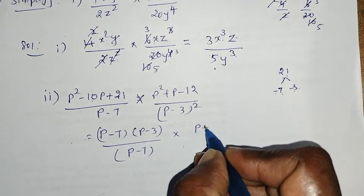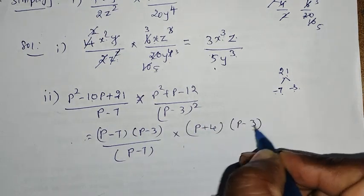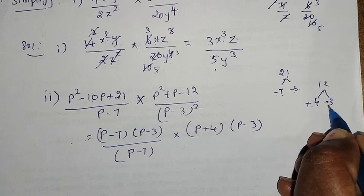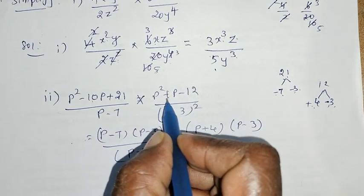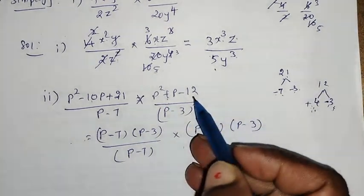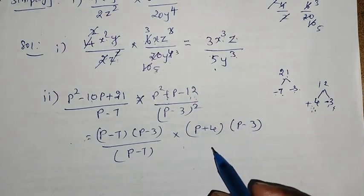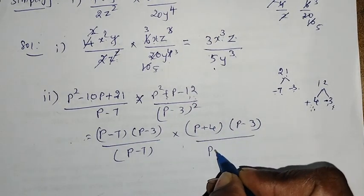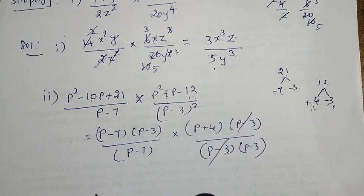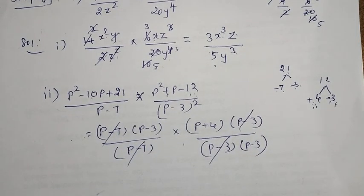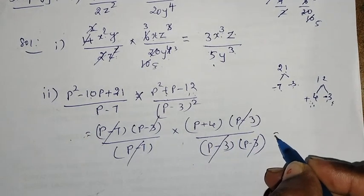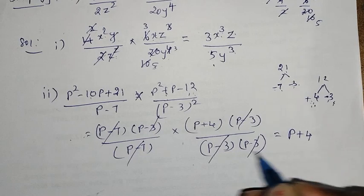Into P plus 4 minus 3. Now 12 is split: 4, 3. Greater number sign plus 4. P plus 4, P minus 3, divided by P minus 3 into P minus 3. P minus 3 cancel, P minus 7 cancel. Again P minus 3 cancel. Equal to P plus 4.